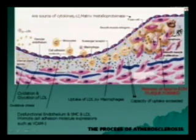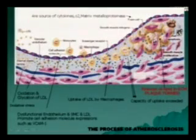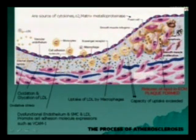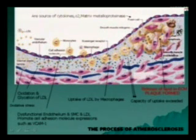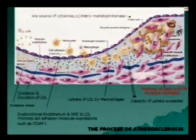Two to three things are happening in concert: foam cells are being formed and smooth muscle cell proliferation is occurring. Subsequently, there is release of lipid from these foam cells into the extracellular matrix, and this released oxidized lipid along with smooth muscle cells goes on to form what is called a fatty streak. The fatty streak is the first part in the formation of an atherosclerotic plaque, which subsequently grows into a full plaque.